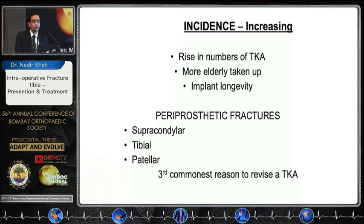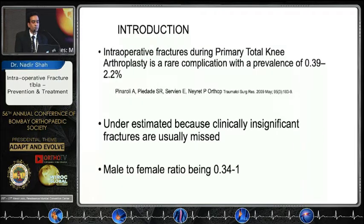More elderly patients are being taken up for surgery and implant longevity is also a reason. The most common periprosthetic fractures are supracondylar and tibia, followed by patella. Periprosthetic fractures are the third most common reason for undergoing revision total knee arthroplasty.